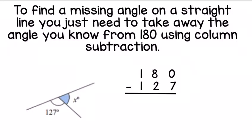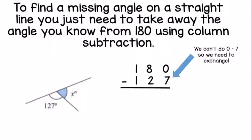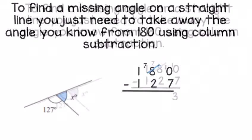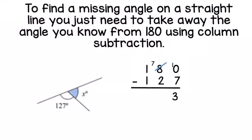We lay this out using column subtraction. We start with the ones, but we can't do 0 take away 7, so we need to exchange. Following the usual steps of column subtraction, you take 1 away from the 8 in the tens column, swapping it for a 7, and then carry over your 1. So your 0 now turns into 10.